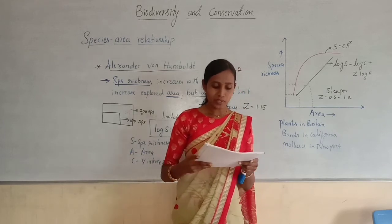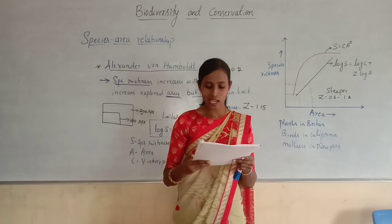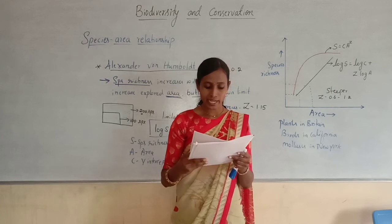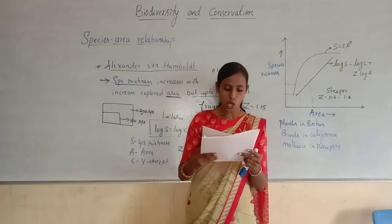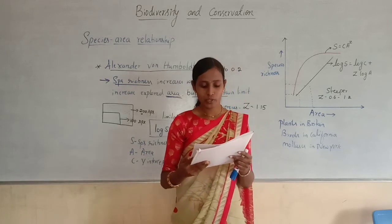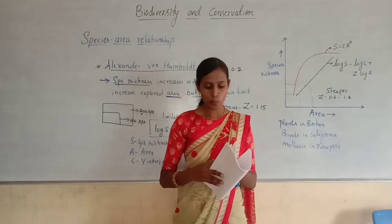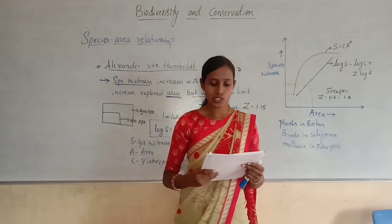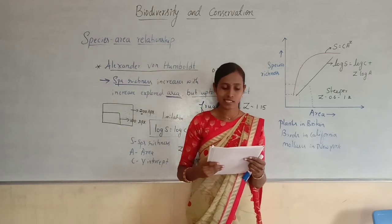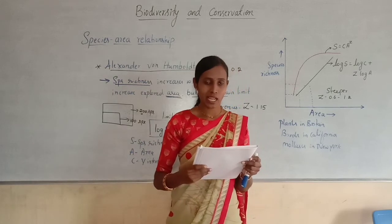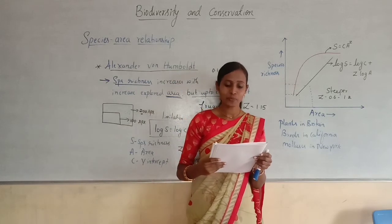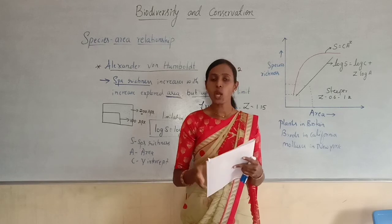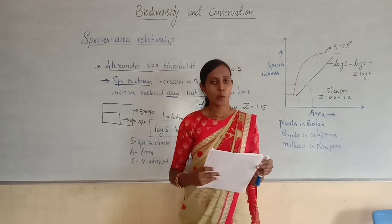Question 38: The relation between species richness and area for a wide variety of taxa turns out to be — Option A: Rectangular Parabola; Option B: Rectangular Hyperbola; Option C: Straight Line; Option D: Sigma. It turns out to be a rectangular hyperbola, so Option B is correct. Question 39: On a logarithmic scale it is — Option A: Rectangular Parabola; Option B: Rectangular Hyperbola; Option C: Straight Line; Option D: Sigma. Generally it is a rectangular hyperbola, but on logarithmic scale it is a straight line, so Option C is correct.